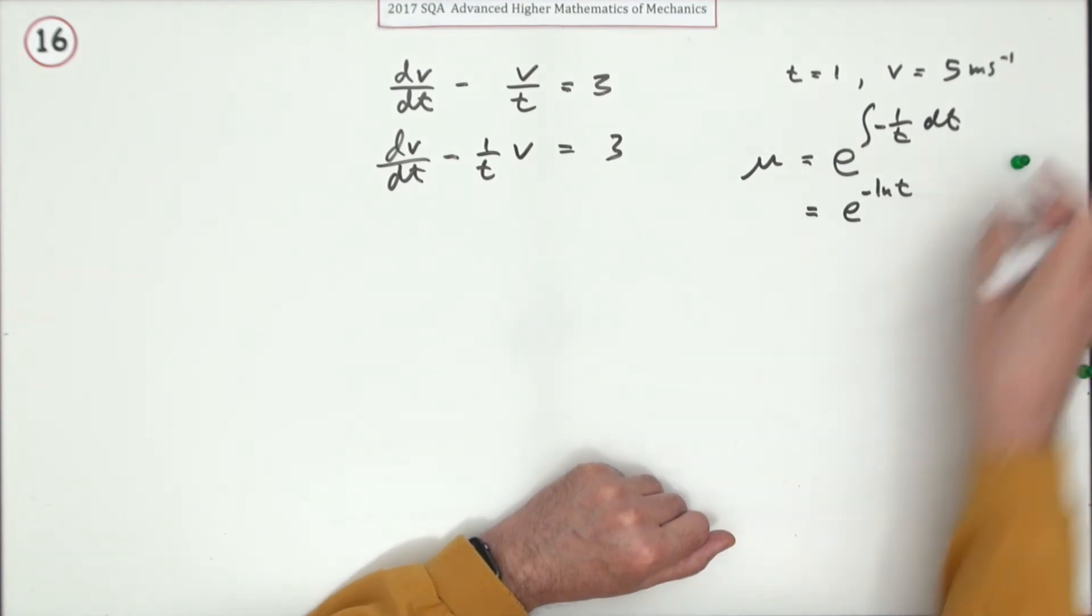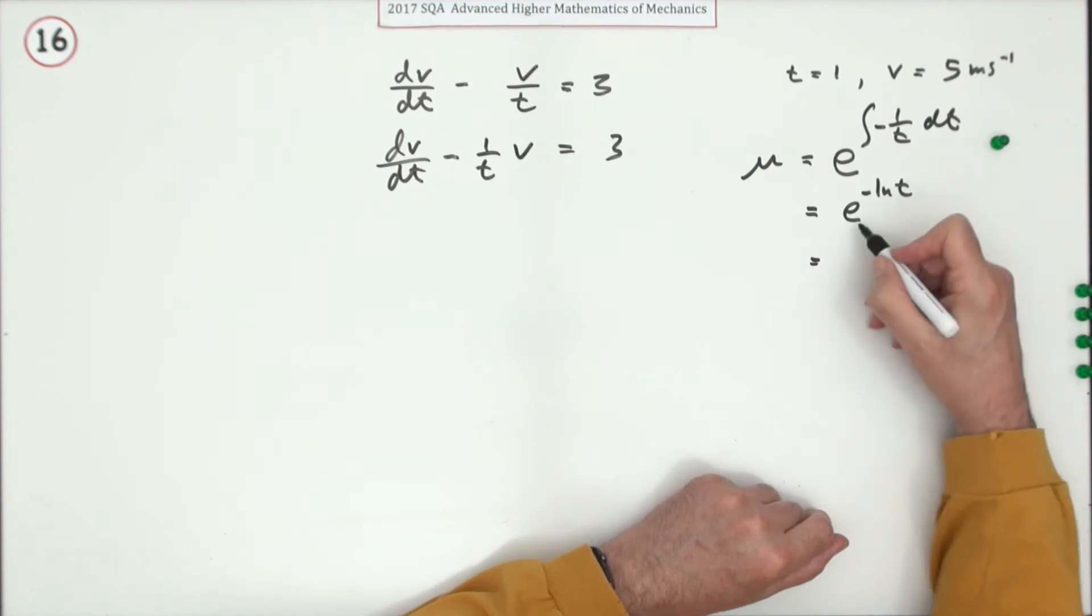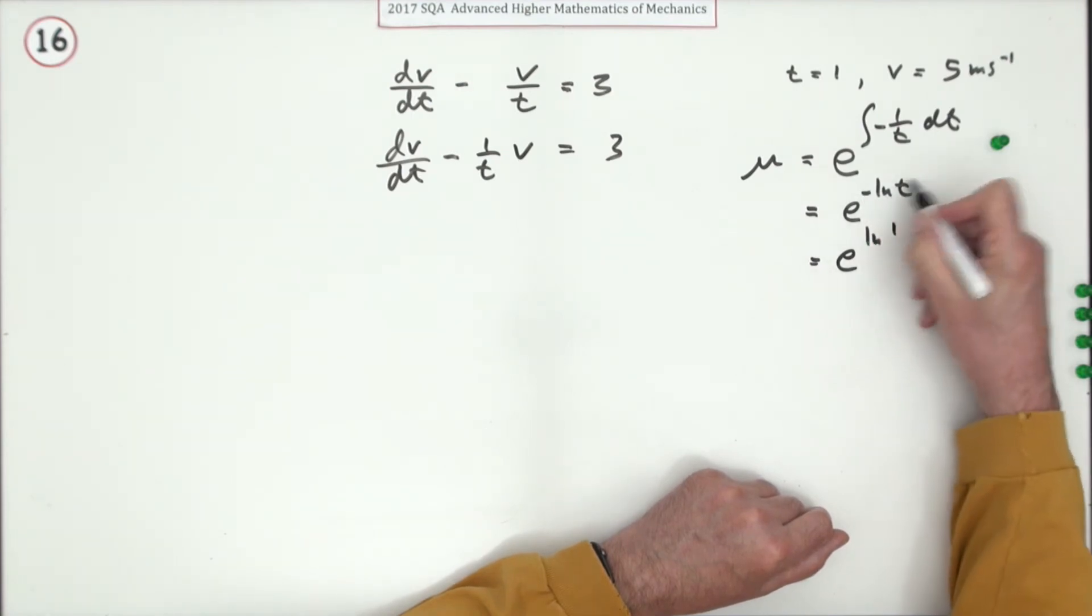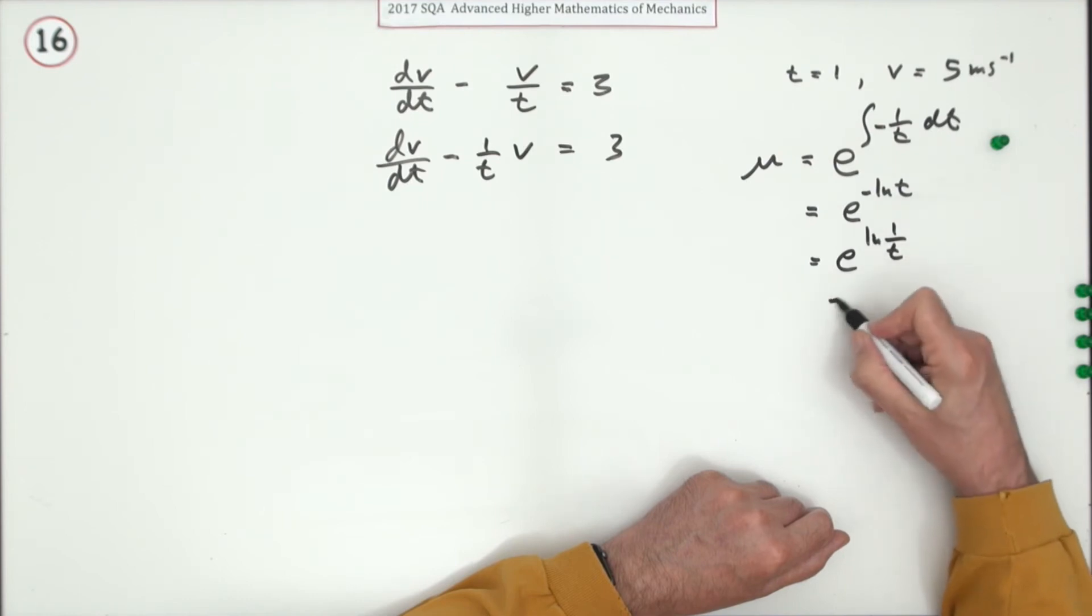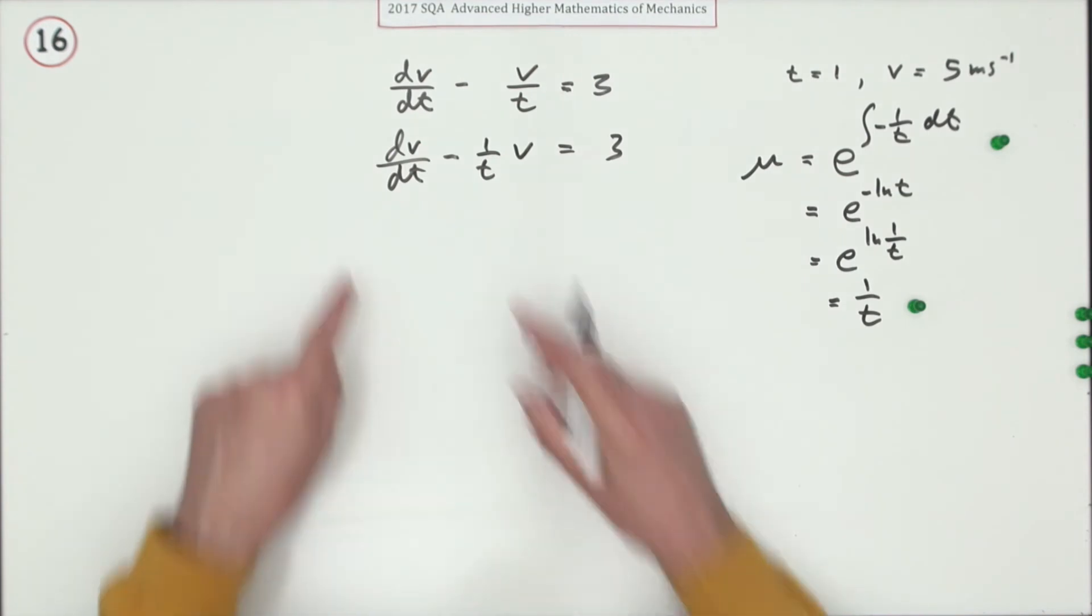Now that can be simplified because that's e^(-ln(t)), so that's e to that—we'll have to take that negative inside as power negative one, so that's 1/(t ln), 1/t ln, and then that's the inverse of that, so that just becomes 1/t. That's the integrating factor.